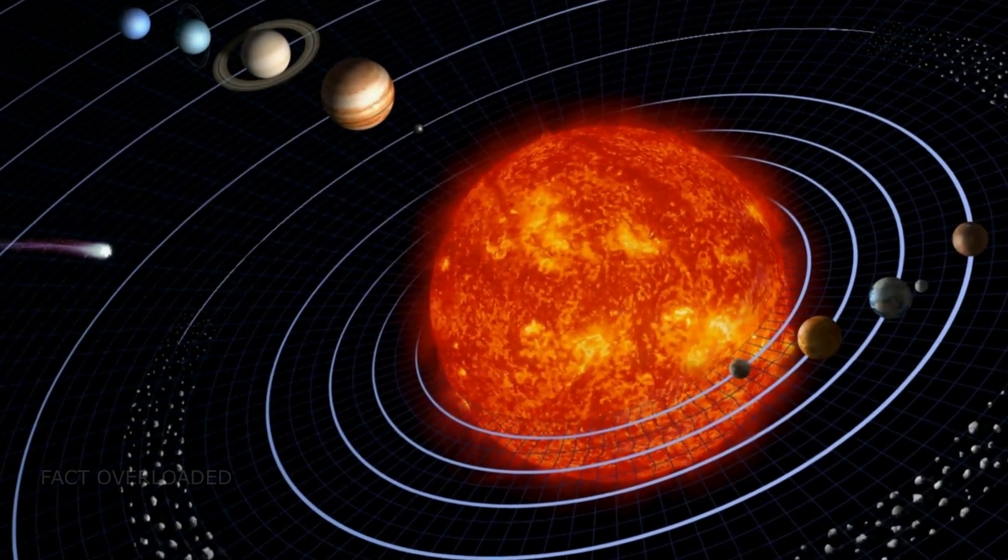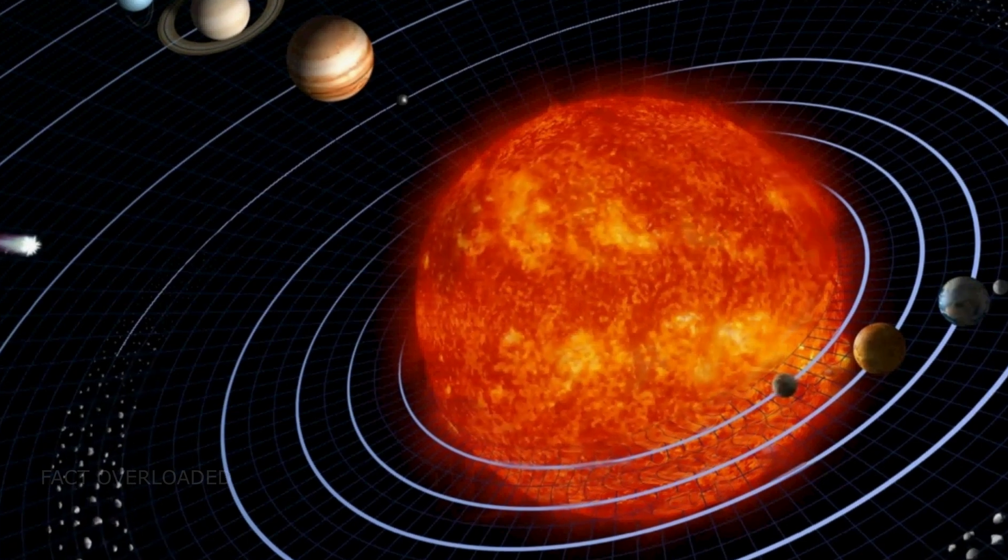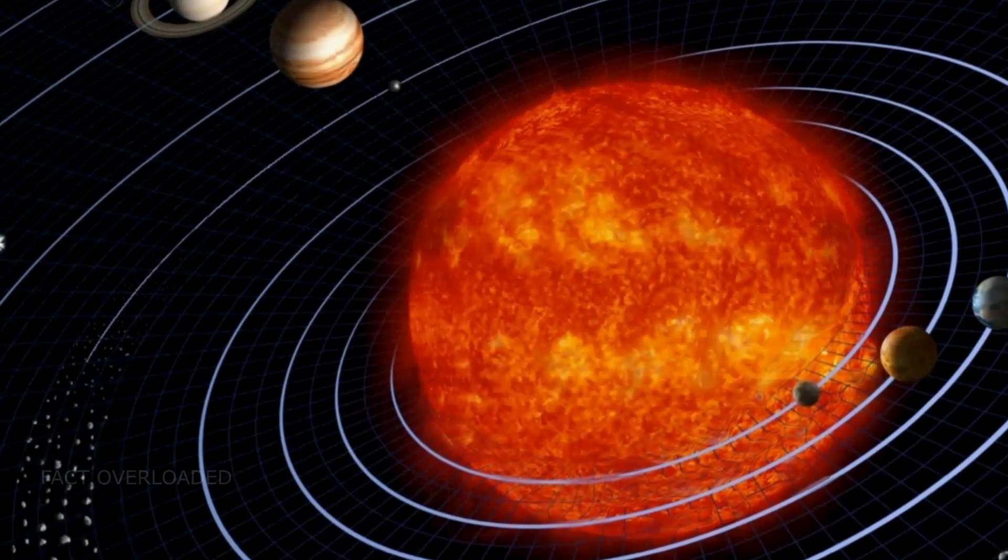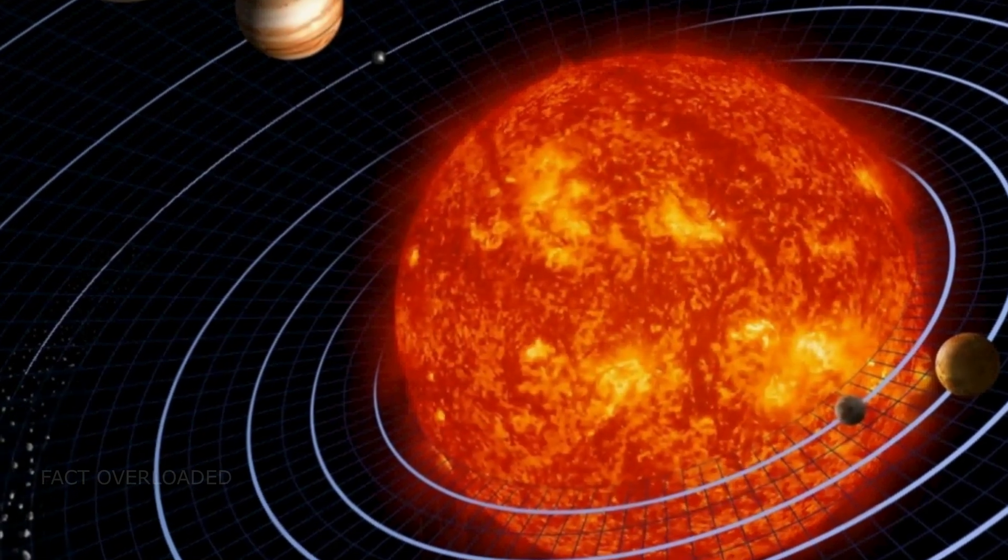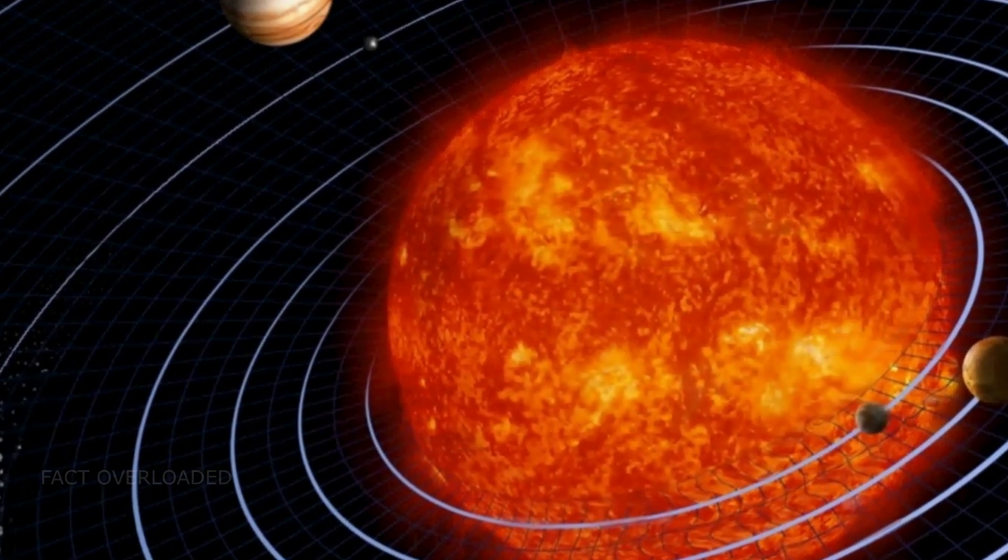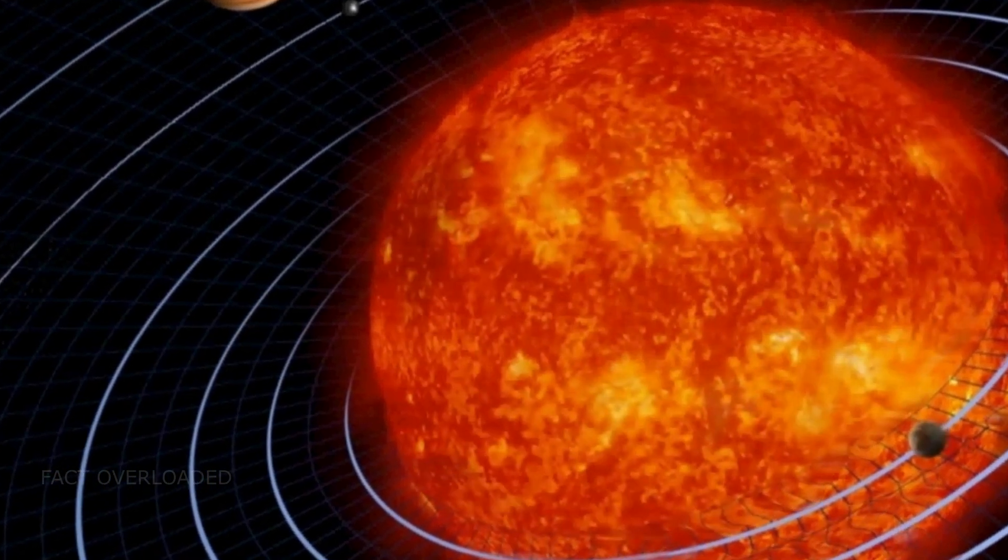Earth's orbital speed average is 29.78 kilometers per second, 107,208 km per hour, 66,616 mph, which is fast enough to cover the planet's diameter in 7 minutes and the distance to the Moon in 4 hours.